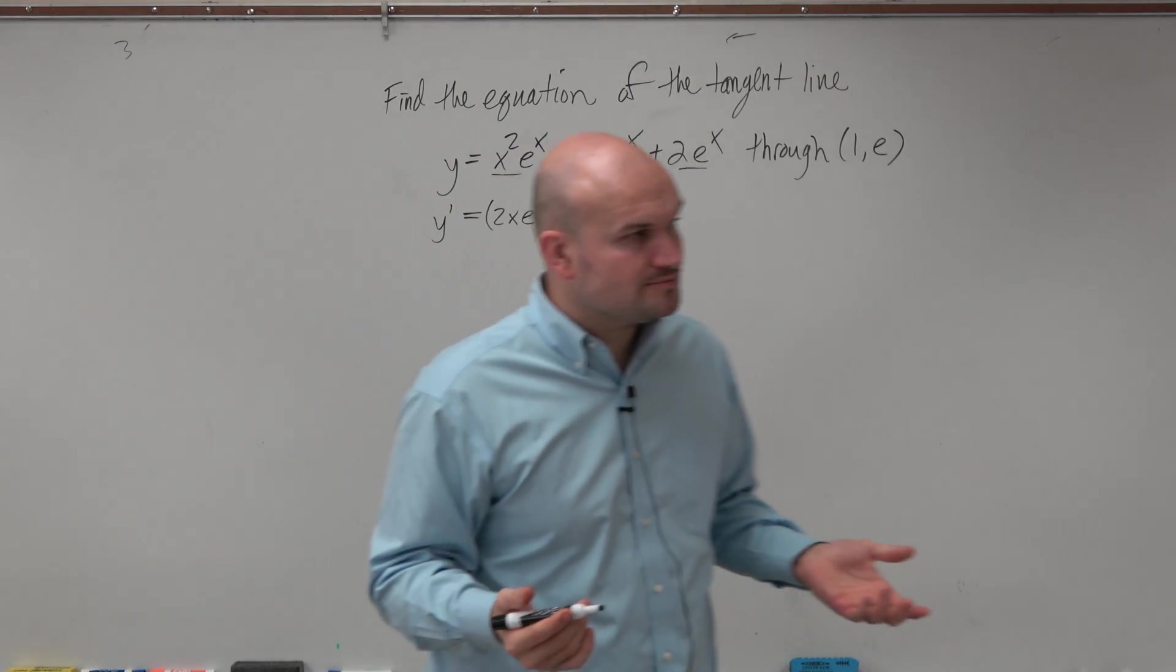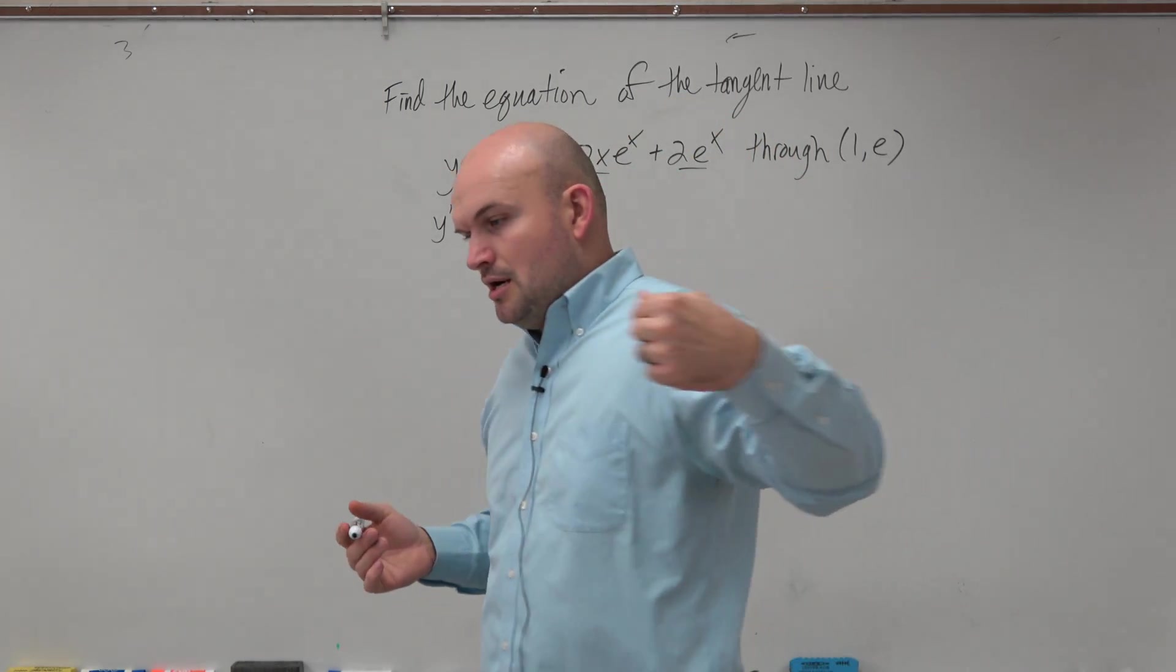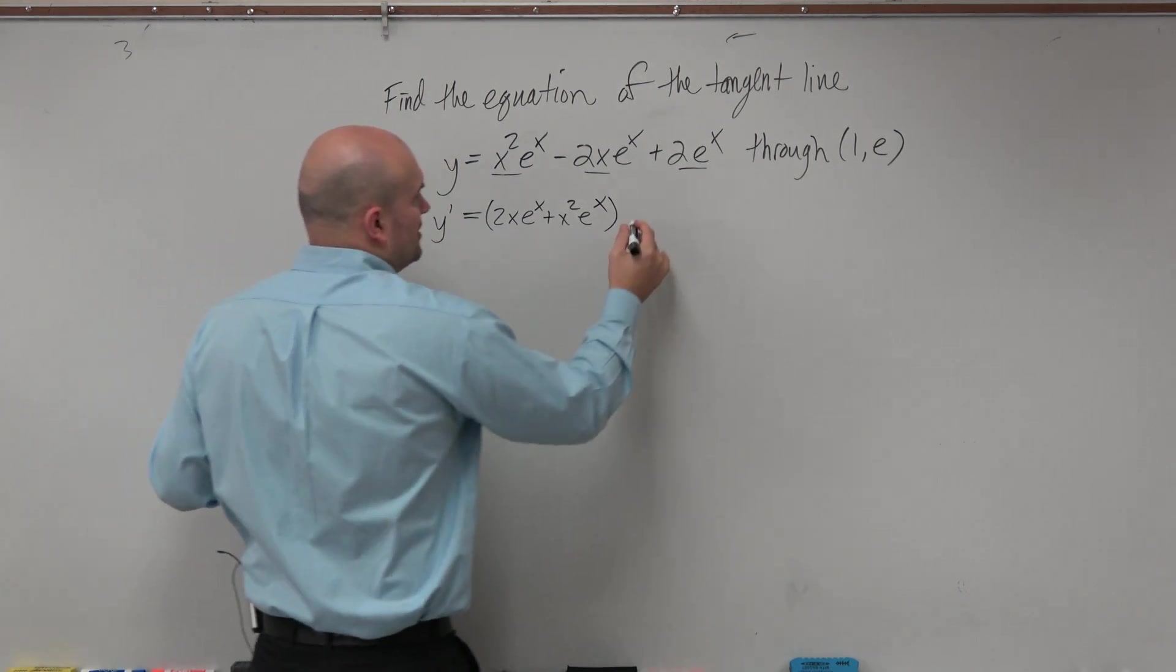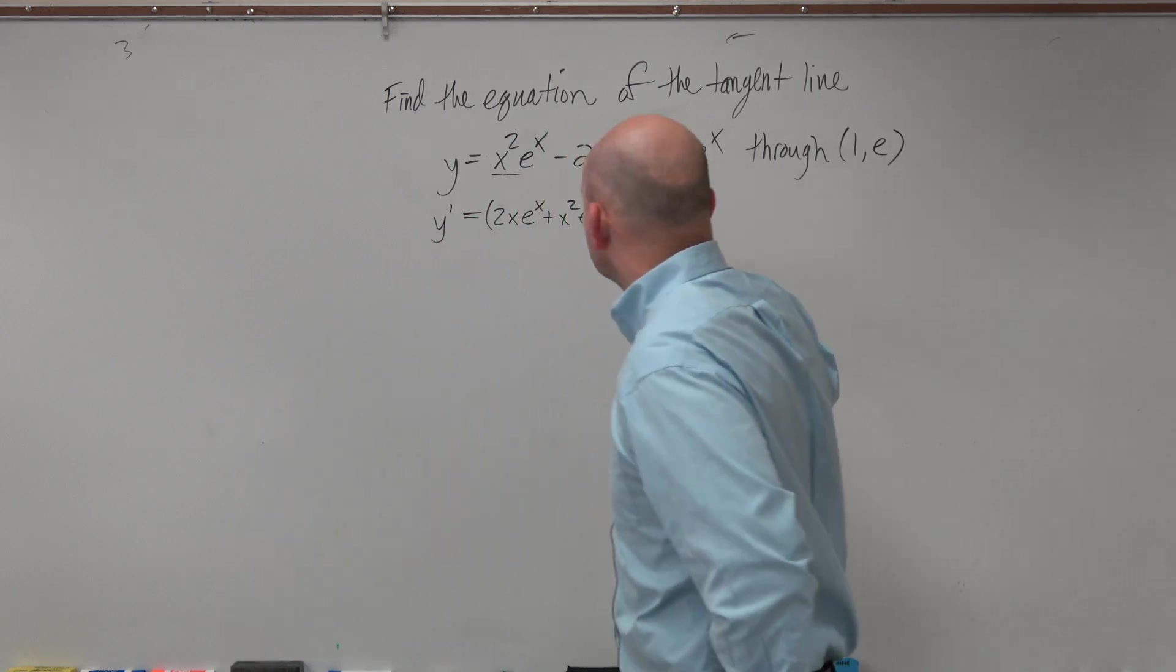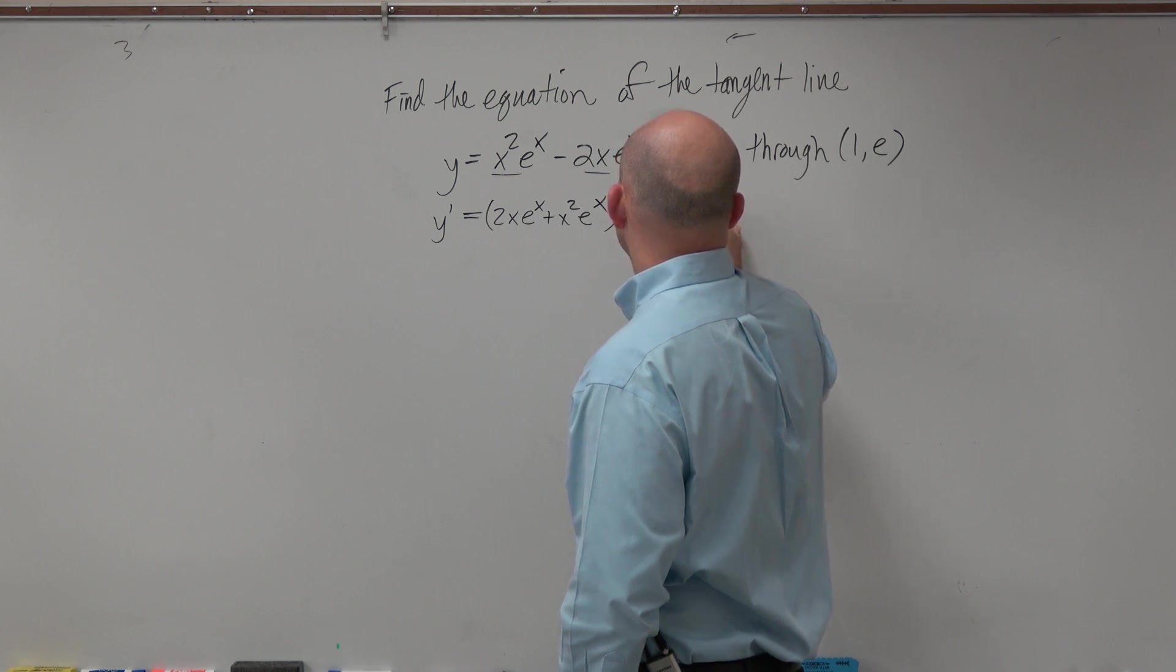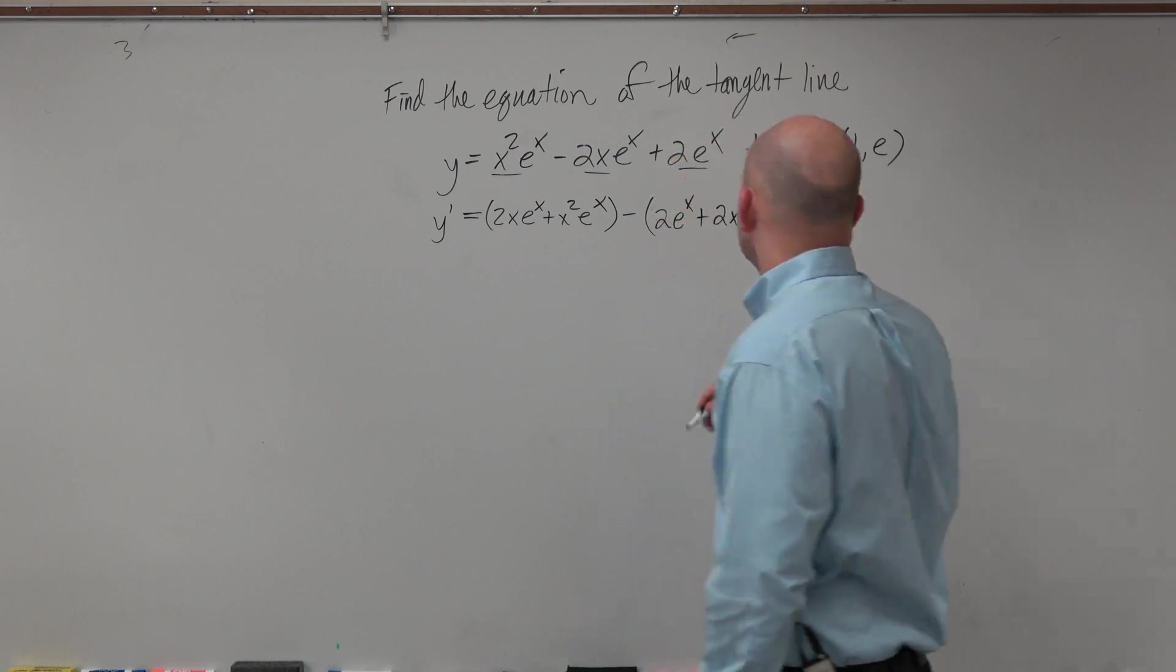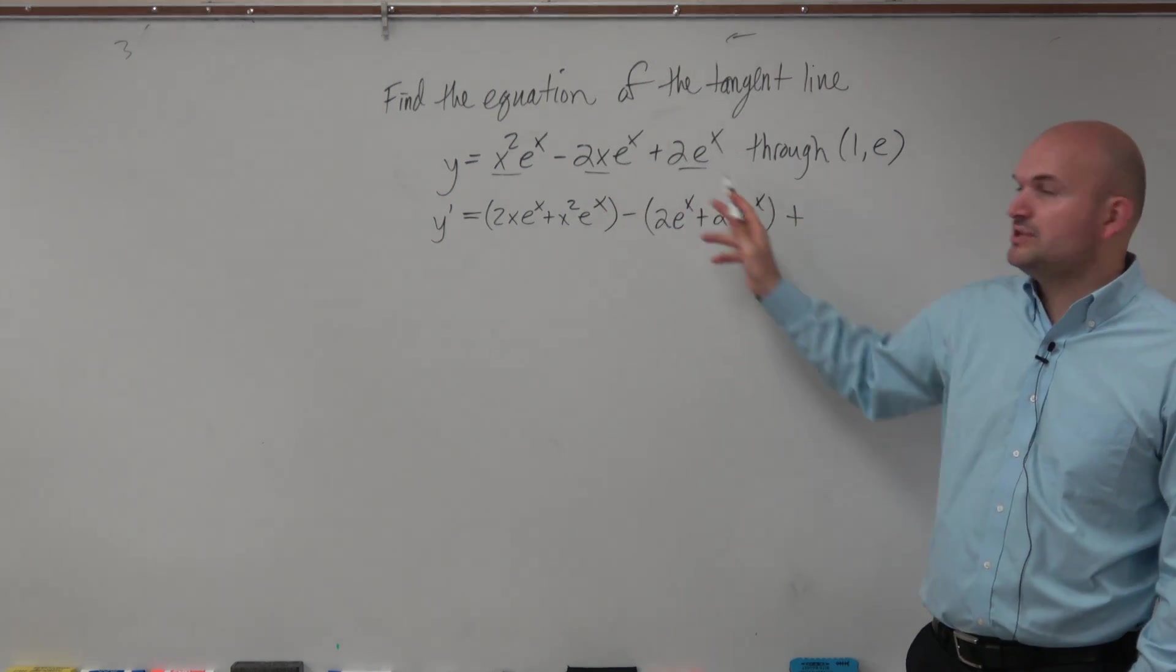Because remember, the derivative of e^x is e^x. And so therefore, minus - let's do the derivative of my second term now, which is going to be 2e^x plus 2x times e^x, plus. So all I did was take the derivative of each one, and I put them in parentheses.